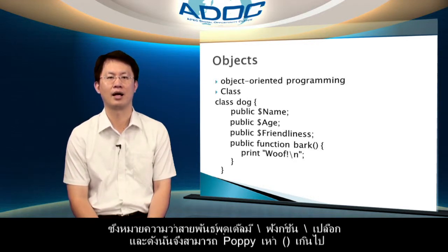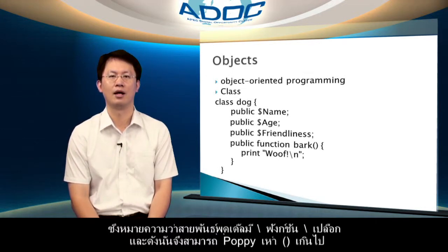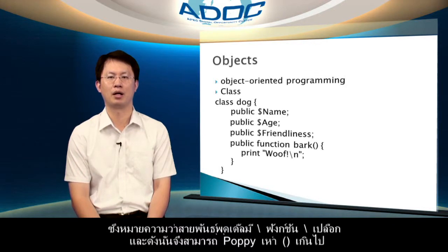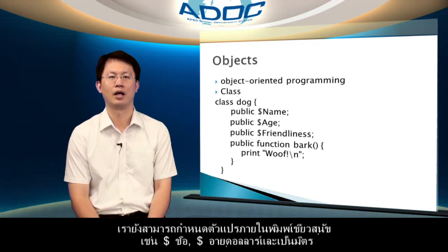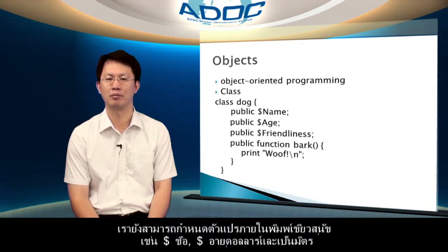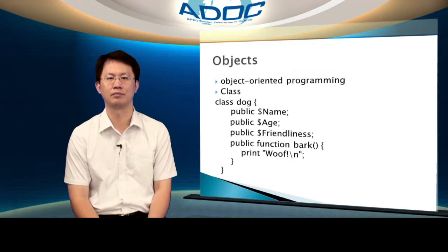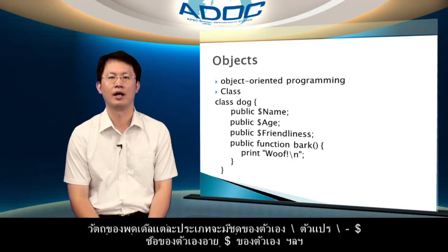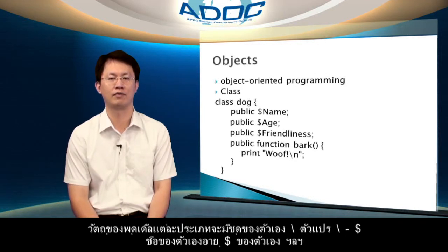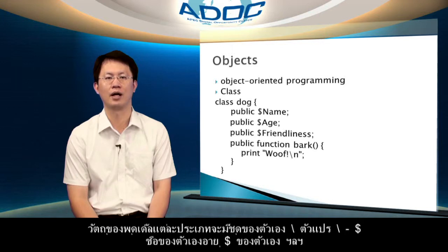And therefore also based upon the dog blueprint. We can create other poodles simply by creating an instance of that breed. And as all dogs are able to bark, we can add a bark function to our dog blueprint, which in turn means that the poodle breed has a bark function — and therefore puppy can bark too. We can also define variables inside the dog blueprint, such as name, age, and friendliness. And each object of type poodle will have its own set of variables — its own name, its own age, etc.